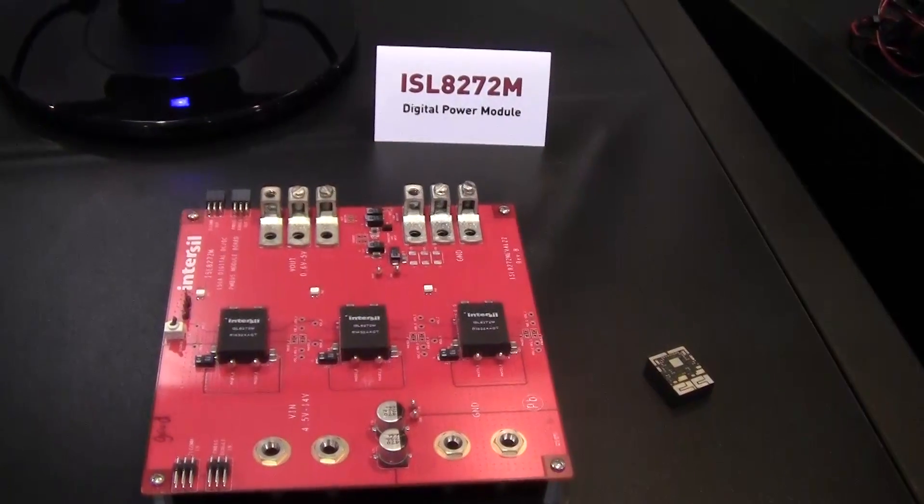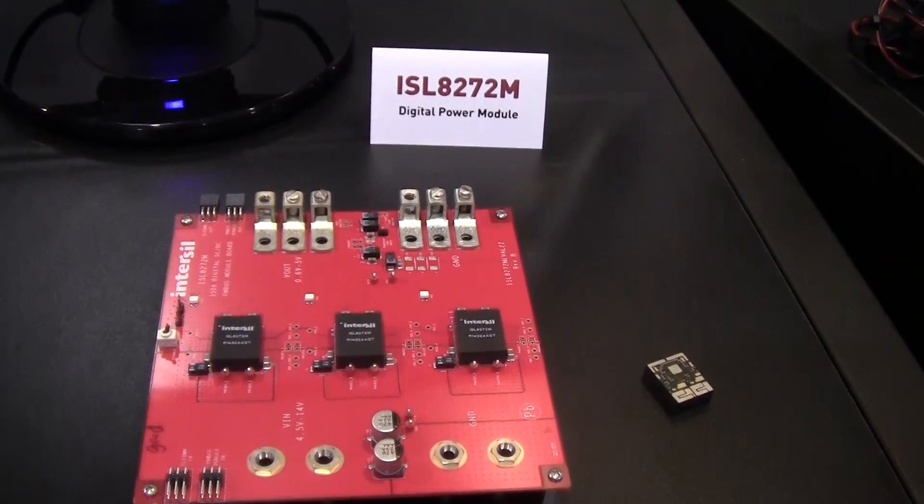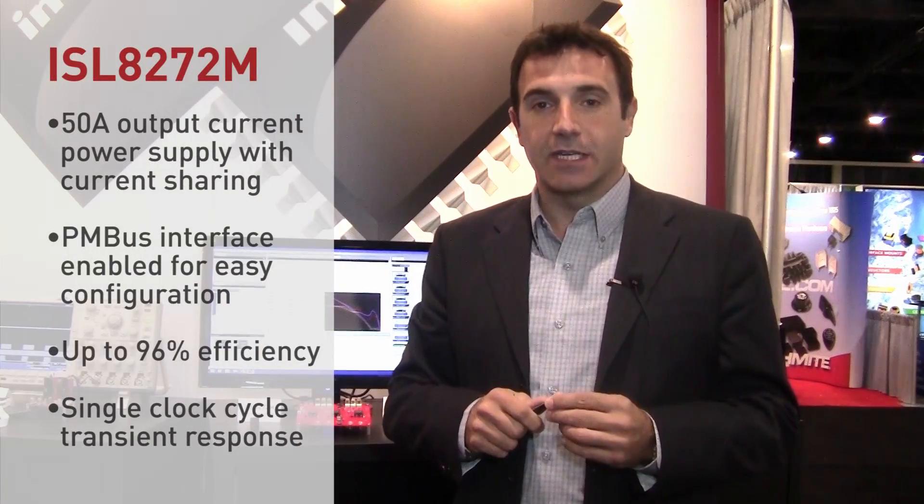The ISL8272M presented here is a fully digital DC to DC power supply in a module. It is capable of outputting 50 amps of output current continuously.